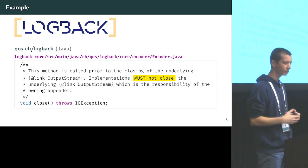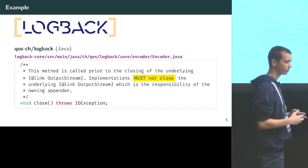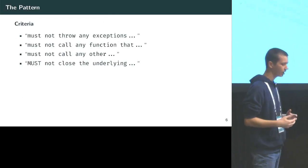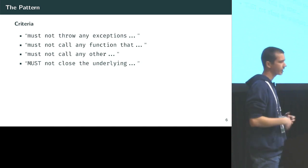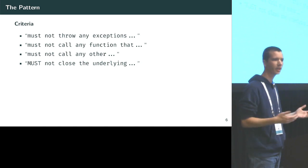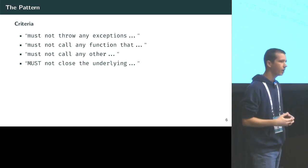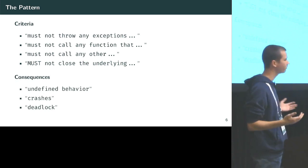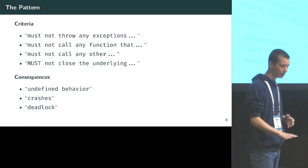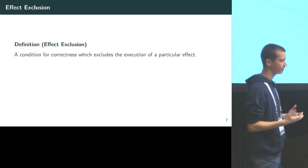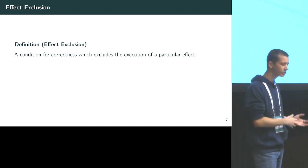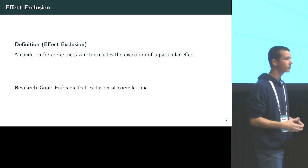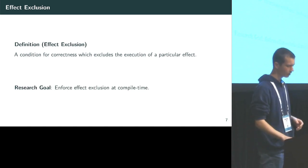Log4back says implementations must not close the underlying output stream, which is the responsibility of the owning appender. The pattern here is clear: in each case we have a criterion saying we can't do something — can't throw exceptions, can't call certain functions, can't close something — and the consequences are catastrophic: undefined behavior, crashes, or deadlock. We call this 'effect exclusion': a condition for correctness which excludes the execution of a particular effect. Our goal is to enforce effect exclusion at compile time.